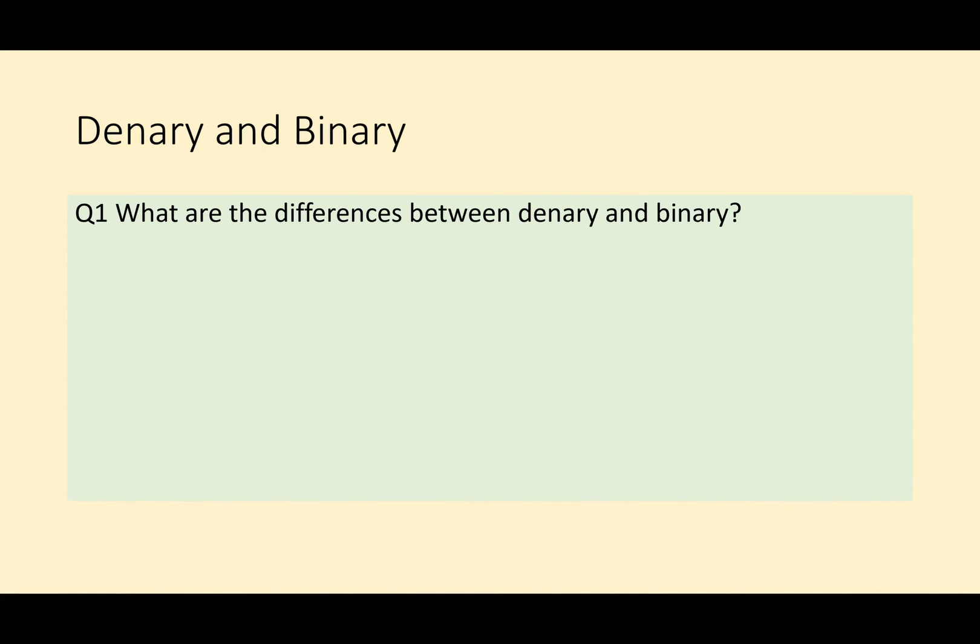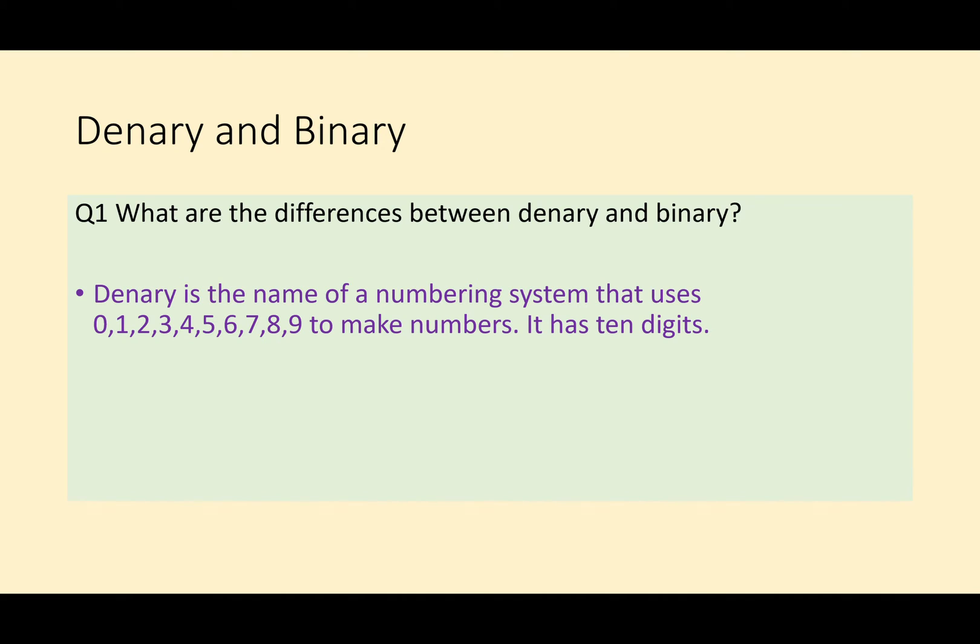Okay, so after pausing the video, let's have a look at a solution to this question. Denary is the name of the numbering system that we use. It's made up of the digits 0, 1, 2, 3, 4, 5, 6, 7, 8, 9, and we use those to make numbers. It has ten digits.